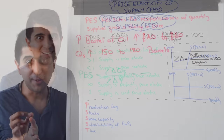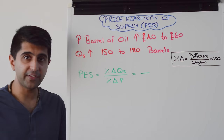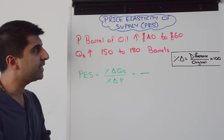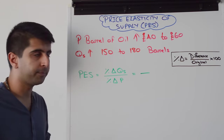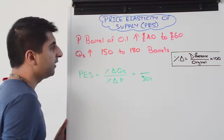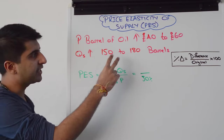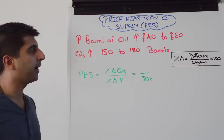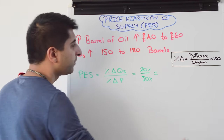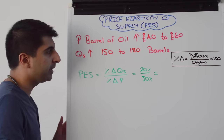Let's do a calculation now. The price of a barrel of oil increases from £40 to £60. Using the percentage change equation, the difference is 20 divided by the original 40 times 100 — that's a 50% increase in price. Quantity supplied increases from 150 to 180 barrels: that's 30 divided by 150 times 100, which is a 20% increase in quantity supplied.